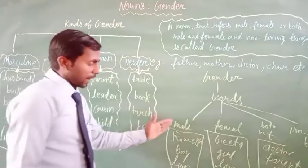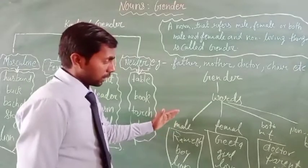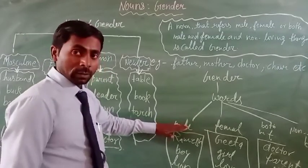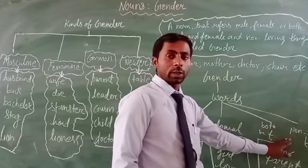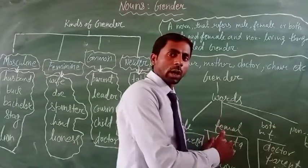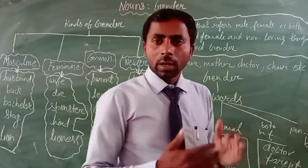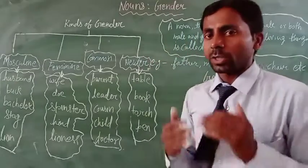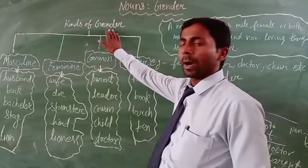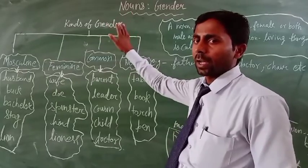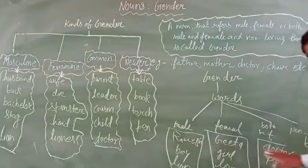We classify these noun words into four parts: male, female, both male and female, and non-living things. According to this classification, we can also divide the noun word — that is, the gender word — into four parts. So there are four parts of gender.